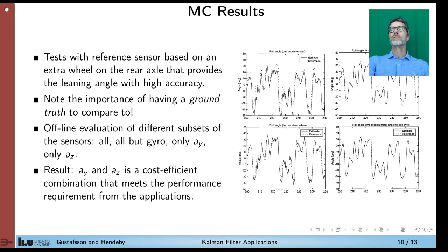If you use all sensors, you get this performance. If you skip the gyro, you get this. You can see that it's not as good, but it still satisfies the performance requirements. So that is, you can get a cost-efficient solution just using cheap accelerometers and skip the more expensive roll gyro for this application.